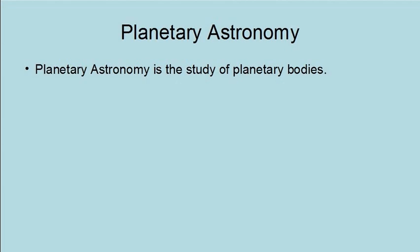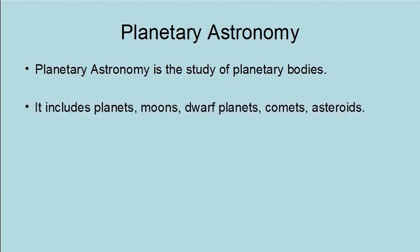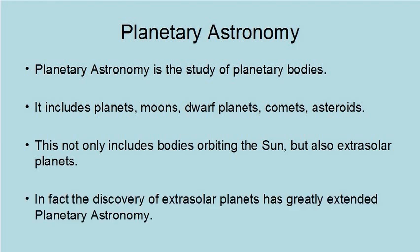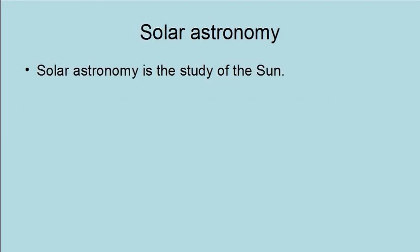A major example is the invention of the notion of dark energy to save the Big Bang from Type Ia supernovae observations. Planetary astronomy is the study of planetary bodies, including planets, moons, dwarf planets, comets, and asteroids. This not only includes bodies orbiting the sun, but extrasolar planets as well. In fact, the discovery of extrasolar planets has greatly extended planetary astronomy.